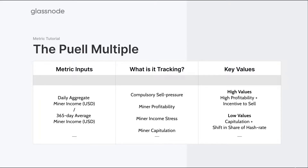In terms of some key values to pay attention to: very high values of the Pure Multiple suggest that the current daily income is much higher than the yearly average. That very high profitability creates an incentive to sell, which can then increase the overall liquid supply as miners liquidate parts of their treasury in order to take advantage of that market strength.